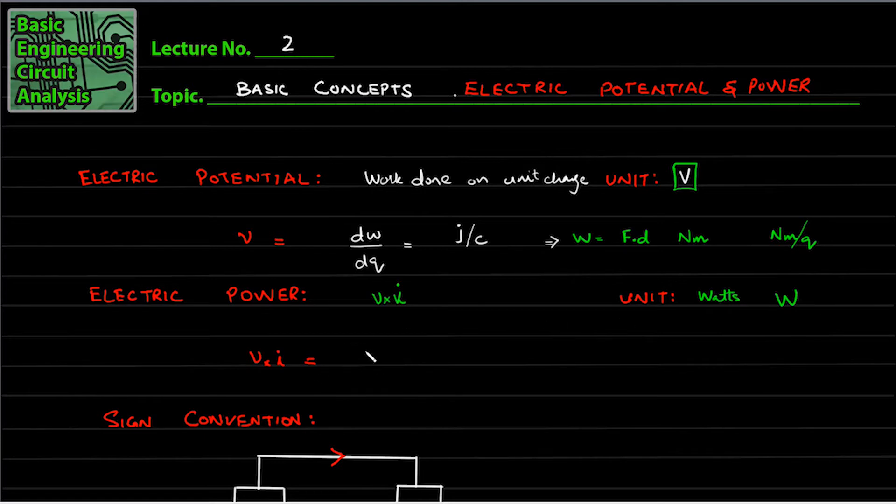So you have V, this is equal to dW by dQ. And the current is dQ by dt. And this dQ can be cancelled out by this dQ. So you will have dW over dt. So this is the unit of power, and that is work done in a unit time. Presented in watts.